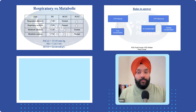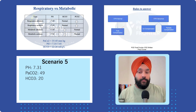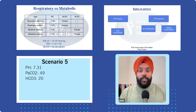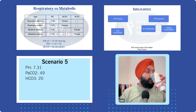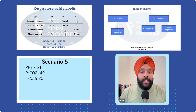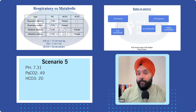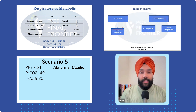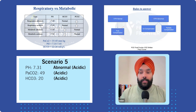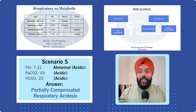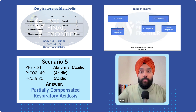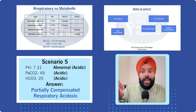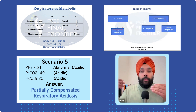Scenario five: pH is 7.31, carbon dioxide is 49, bicarbonates are 20. Is pH normal? It's acidic. Carbon dioxide has increased to 49 — acidic. Bicarbonates reduced to 20 — also acidic. This is partially compensated respiratory acidosis, because carbon dioxide changed more than bicarbonates. Carbon dioxide is winning the game and pH remains acidic.